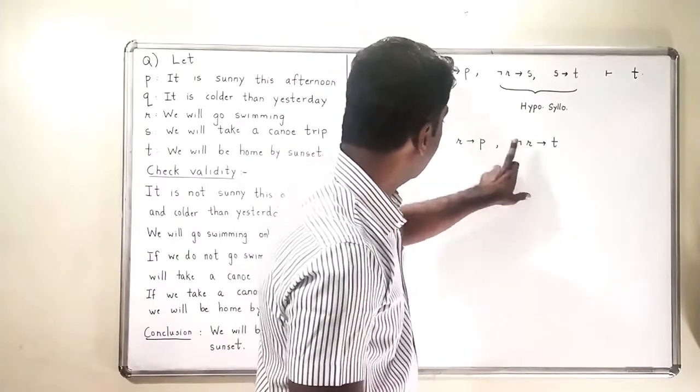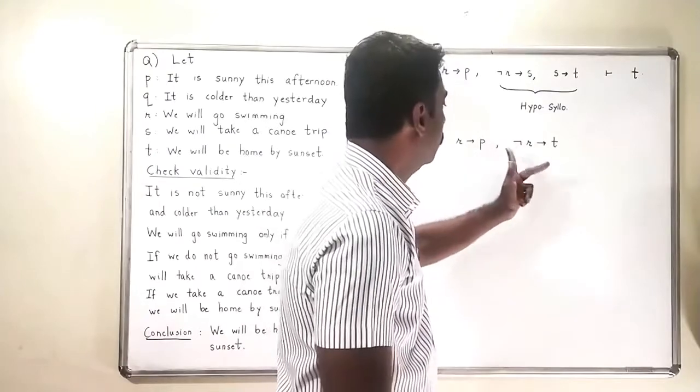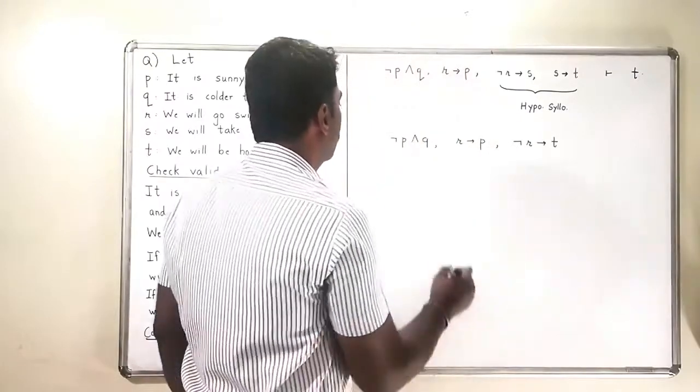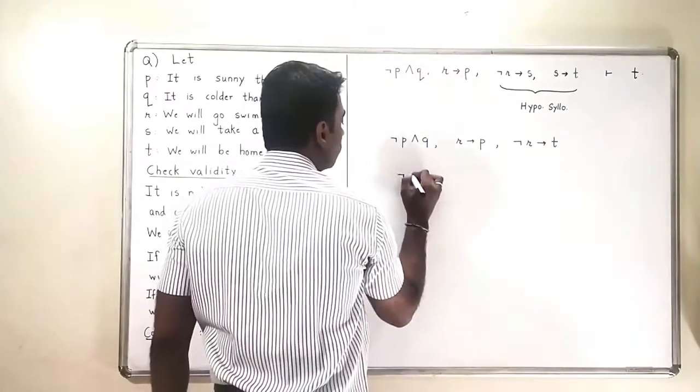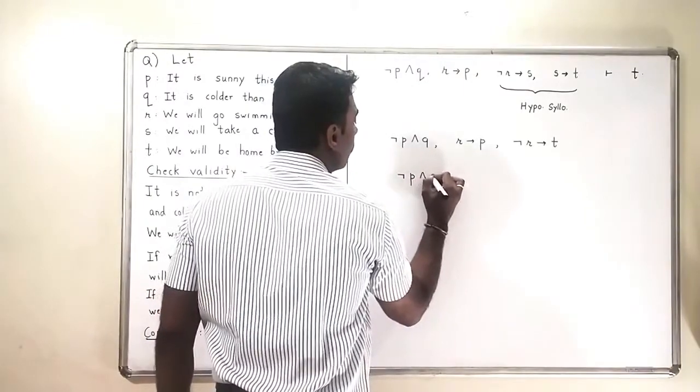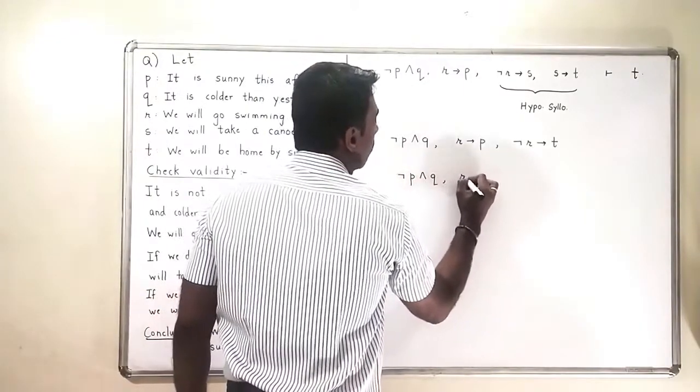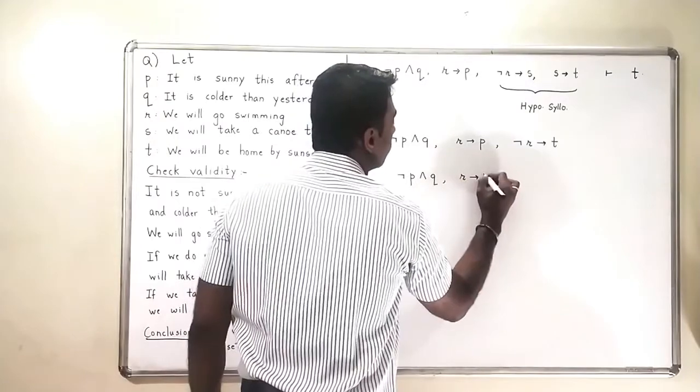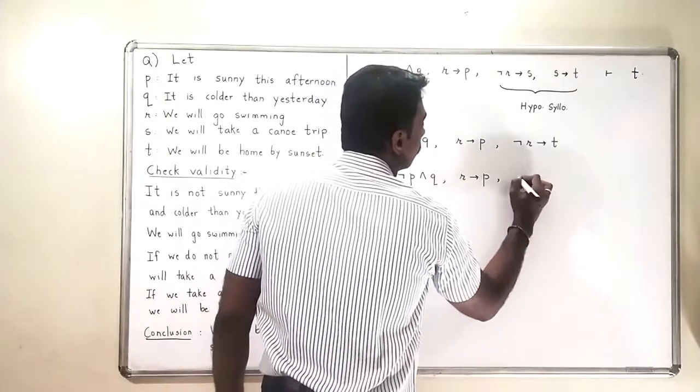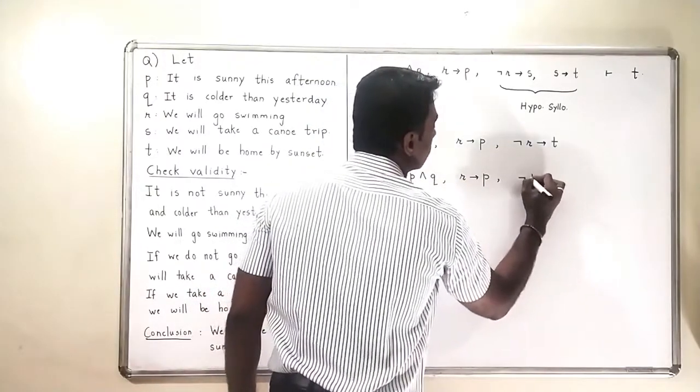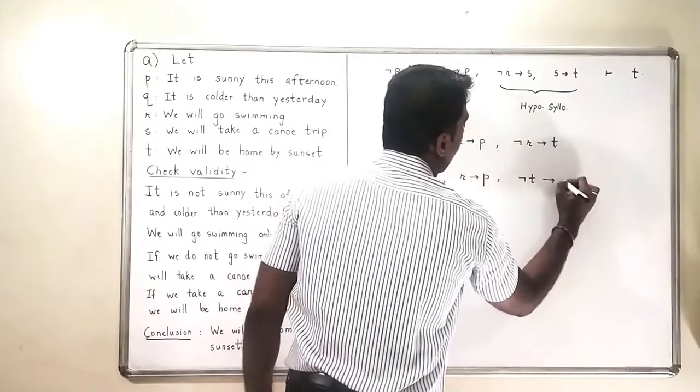So I will try to convert this into contrapositive. So what will I get? Negation P and Q, R implies P, and here I am going to get negation T implies R.